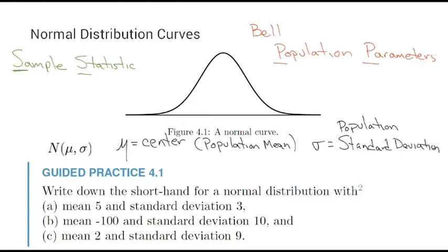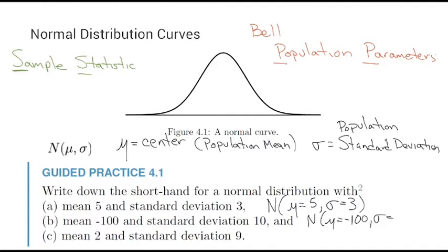If I tell you a population is approximately normal with a given population mean and standard deviation, you should be able to come up with a rough approximation of the curve. Let's practice the shorthand. A normal distribution with a mean of 5 and standard deviation of 3 is written as N(mu=5, sigma=3). Mean of negative 100 and standard deviation of 10: N(mu=-100, sigma=10). Mean of 2 and standard deviation of 9: N(mu=2, sigma=9).